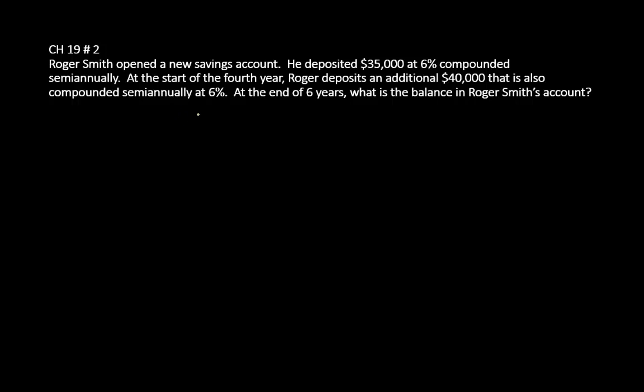We're going to break this problem into two parts: the first three years and then the last three years. The equation we're going to be using here is the future value equation, which is FV (future value) equals PV (present value) times (1 + i)^N, where i is the rate and N is the period.